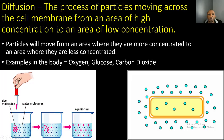Diffusion is the process of particles moving across the cell membrane from an area of high concentration to an area of low concentration. Particles move from where they are more concentrated to where they are less concentrated. Examples in our body include oxygen, glucose, and carbon dioxide. Looking at dye molecules: they start highly concentrated and tightly packed, then diffuse to an area of lower concentration until they are equally diffused throughout the solution.